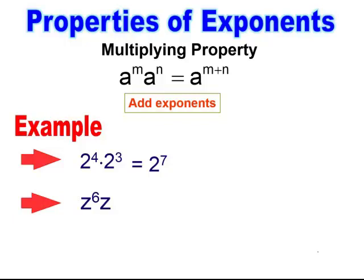Here I have z to the 6th times z. Don't miss that exponent of 1 — z has an exponent of 1 but we won't see it written. When we multiply together, every base has an exponent, and that exponent would be 1. So when I simplify, I end up with z to the 7th power.